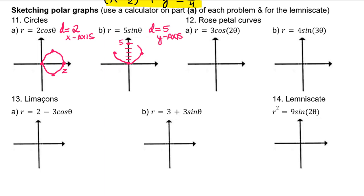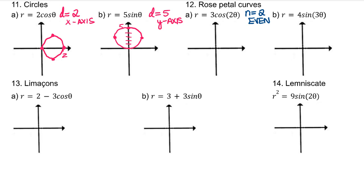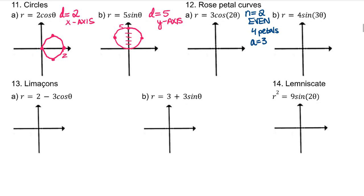For part B, d equals 5. And we have y-axis symmetry because it is sine theta. For rose-petal curves, A is the maximum radius possible. We are going to have n petals if n is odd and 2n petals if n is even. Cosine indicates x-axis symmetry and sine indicates y-axis symmetry. n equals 2 is even, which means this rose curve will have 4 petals. A is 3, which means our max radius is 3. And cosine means we have x-axis symmetry.